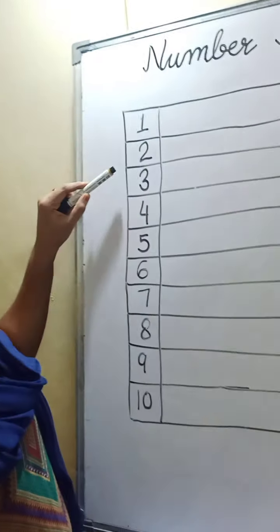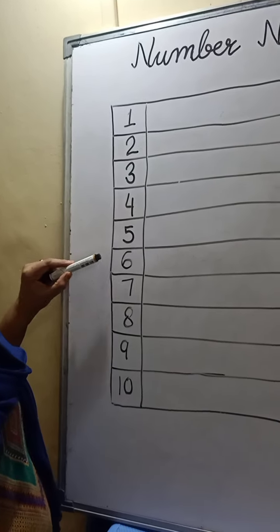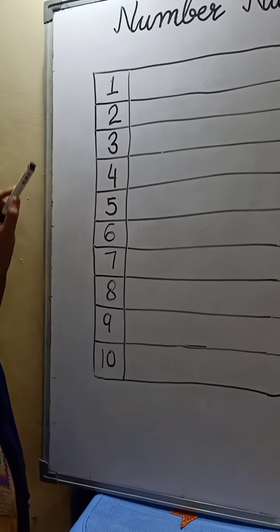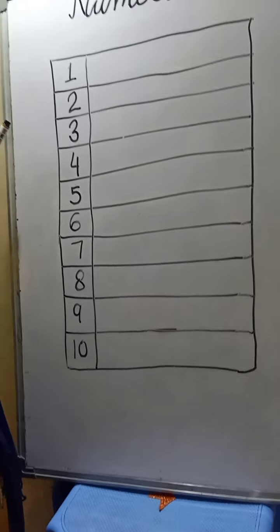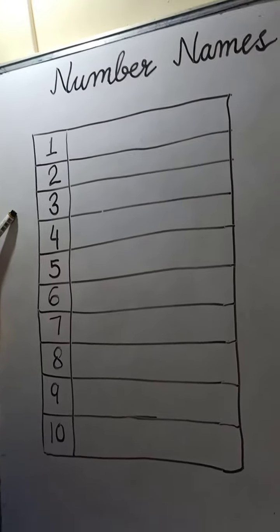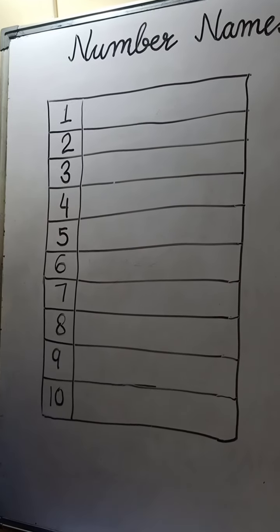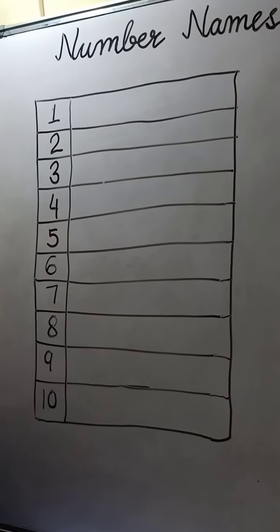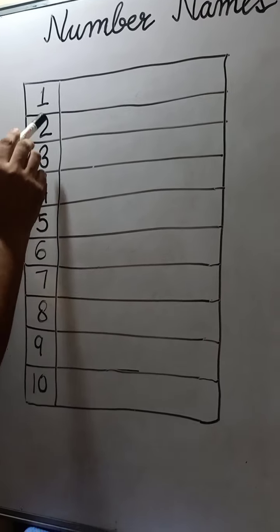These numbers 1, 2, 3, 4, 5, 6, 7, 8, 9 and 10 are called cardinal numbers also. Let us start about the number names and today's e-learning class. Now this is the number 1. We will learn spelling of 1.